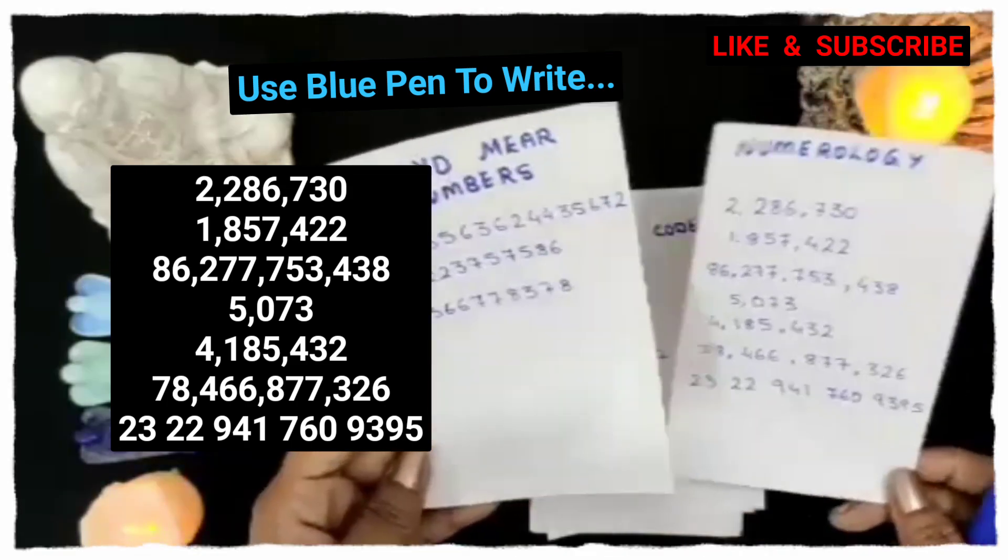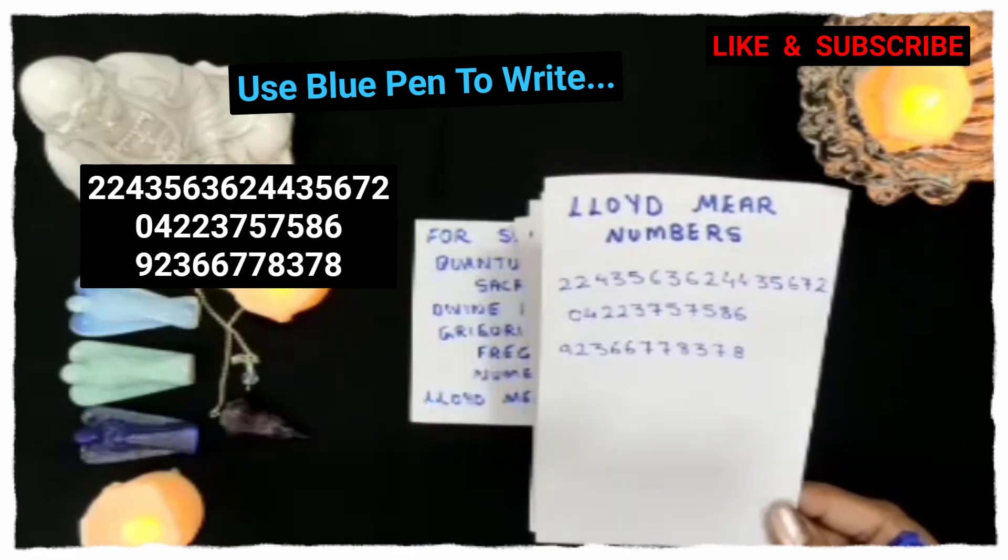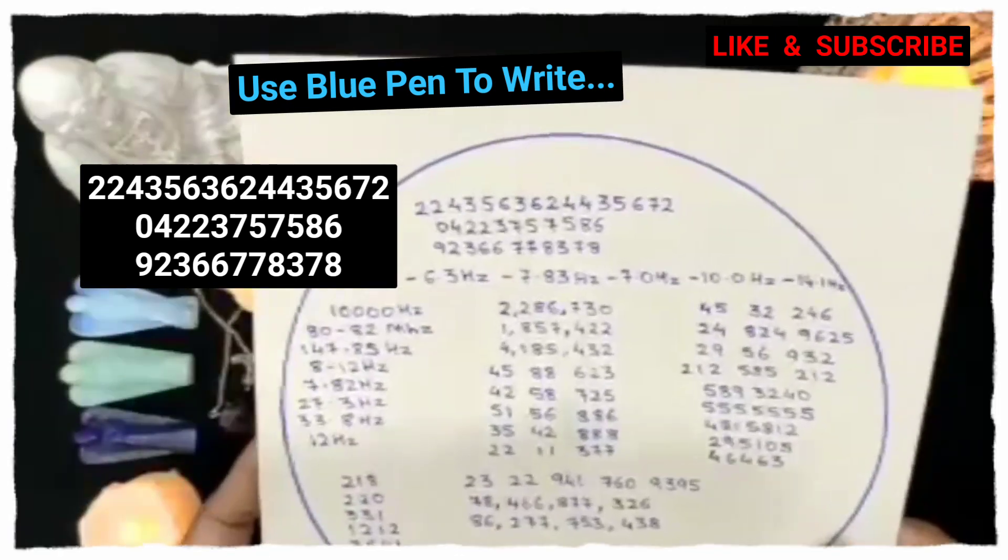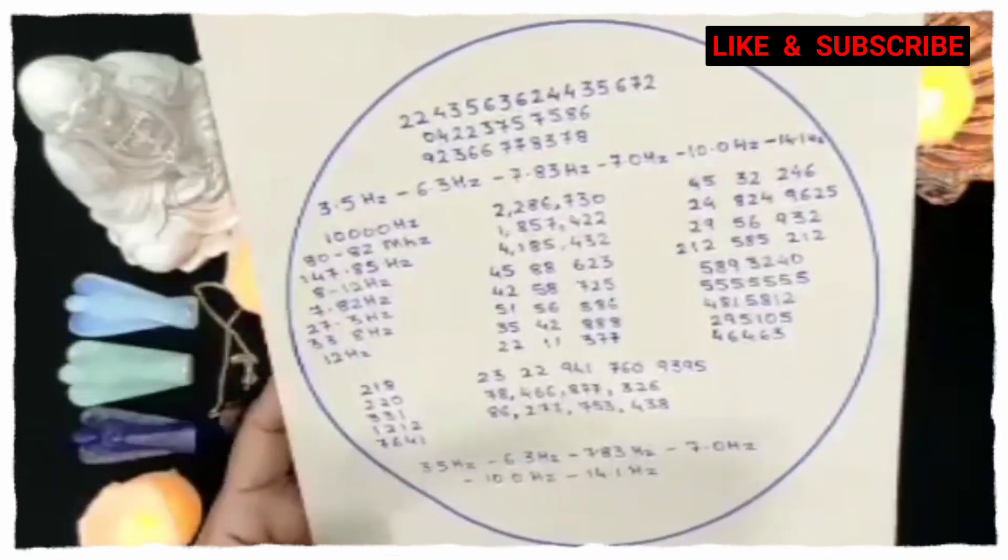You can write these codes and numbers on your notebook or books. You can make an energy circle like this and write all the codes. Just make sure the codes are not jumbled up.